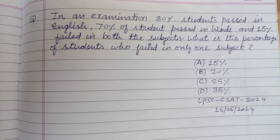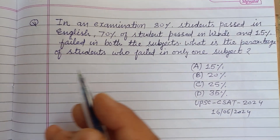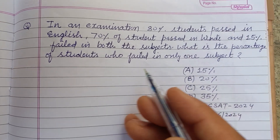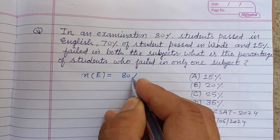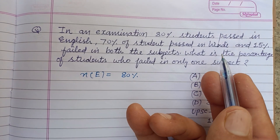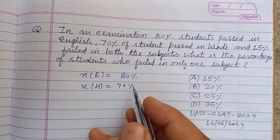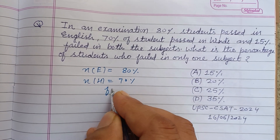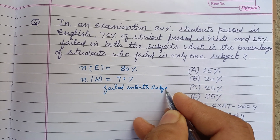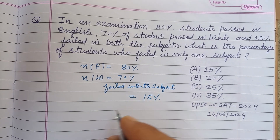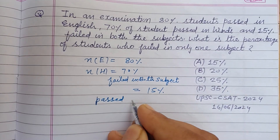Hello viewers, warm welcome to this YouTube channel. This question is from UPSC CSET 2024, 16 June 2024. In an examination, 80% of students passed in English and 70% of students passed in Hindi. 15% failed in both subjects.